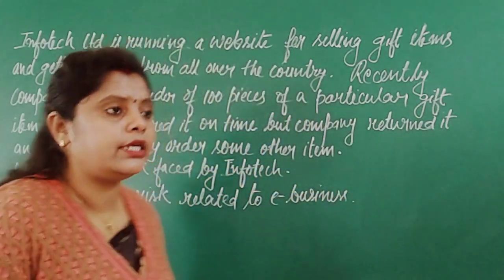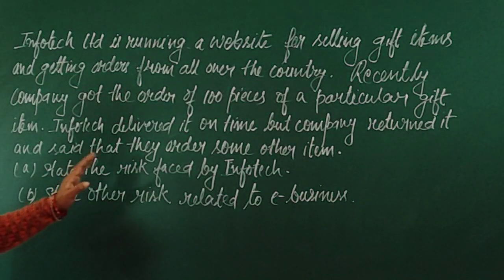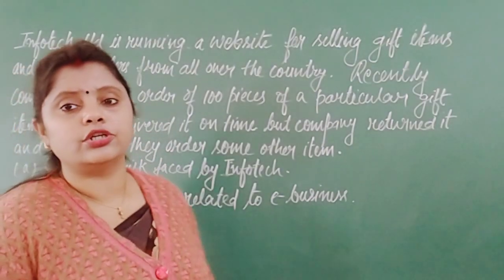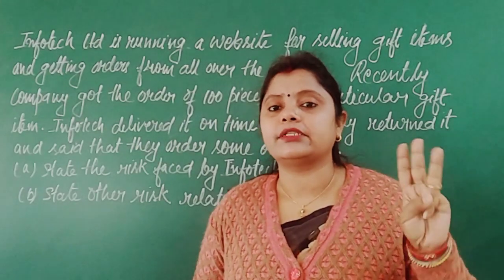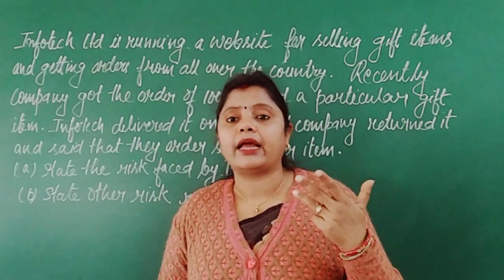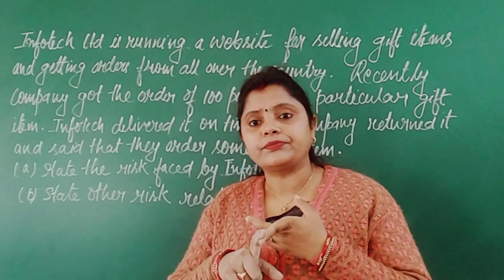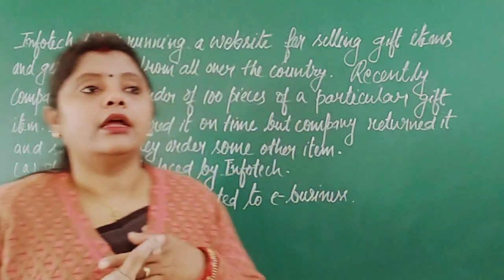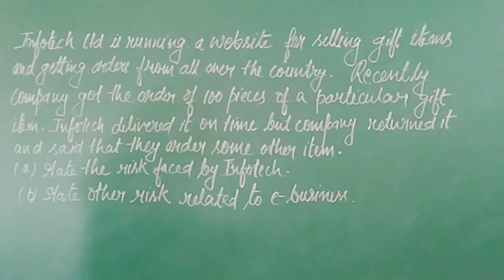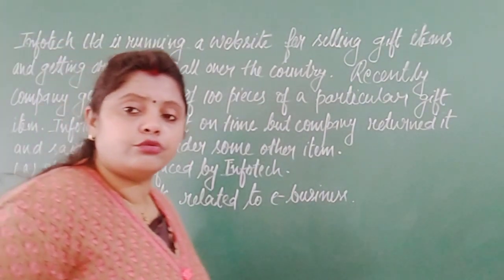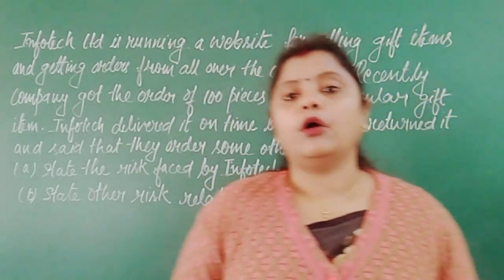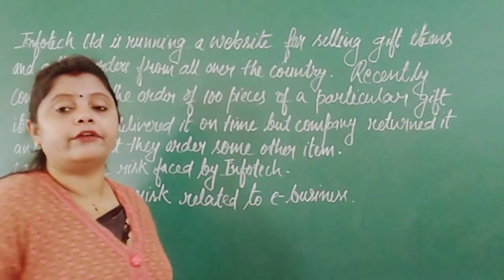The question asks: state the risk faced by Infotip. If you remember, in e-business there are three risks categorized. Transaction risk is one of them. The second risk is data storage and transmission risk. And the third risk is risk of threat to intellectual property and privacy. So there are three types of risks, and right now we are talking about the first risk.